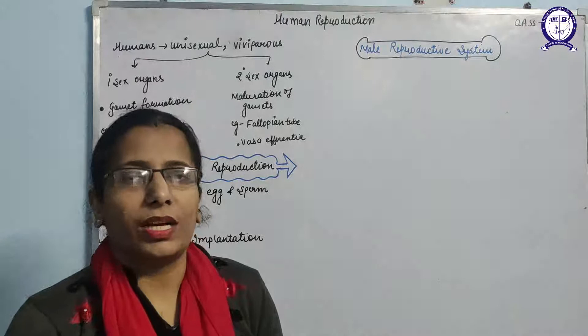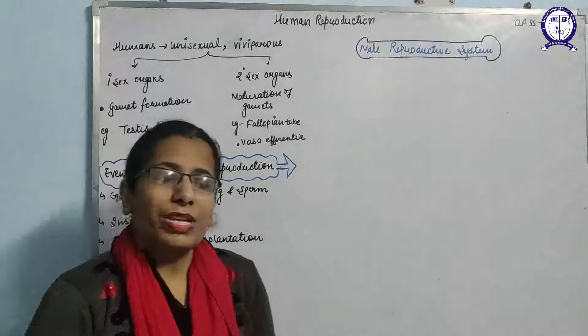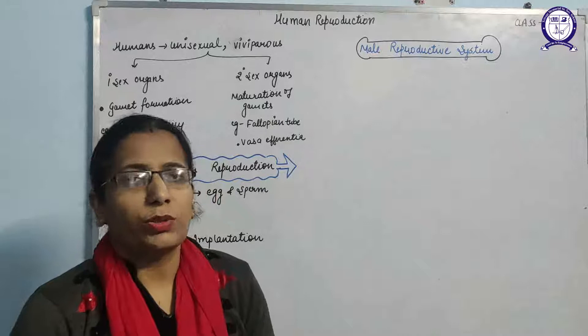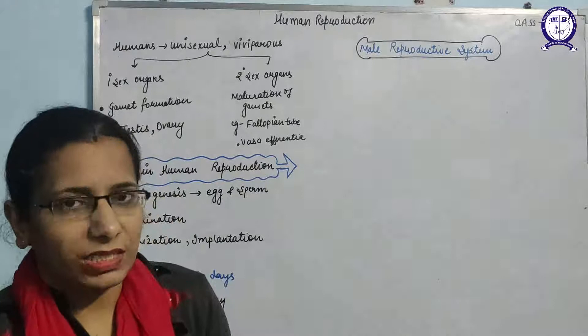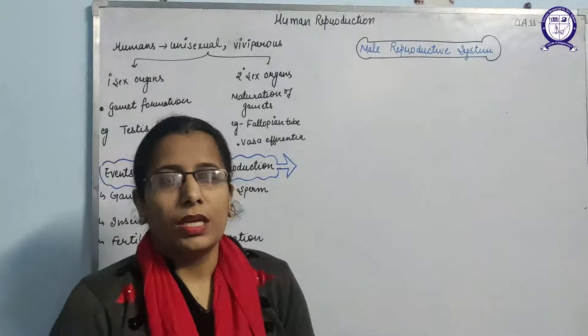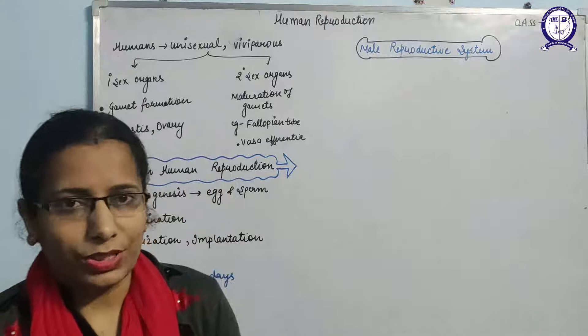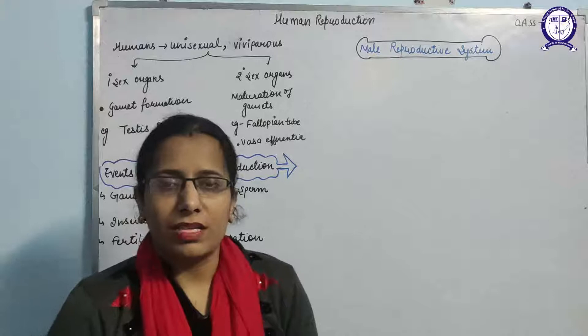Secondary sex organs are where maturation of the gametes takes place. After gametes are released from the gonads, they pass through the secondary sexual organs where maturation occurs. In females, these include the uterus and fallopian tube. In males, these include the epididymis, vasa afferentia, vasa deferentia, ejaculatory duct, etc.